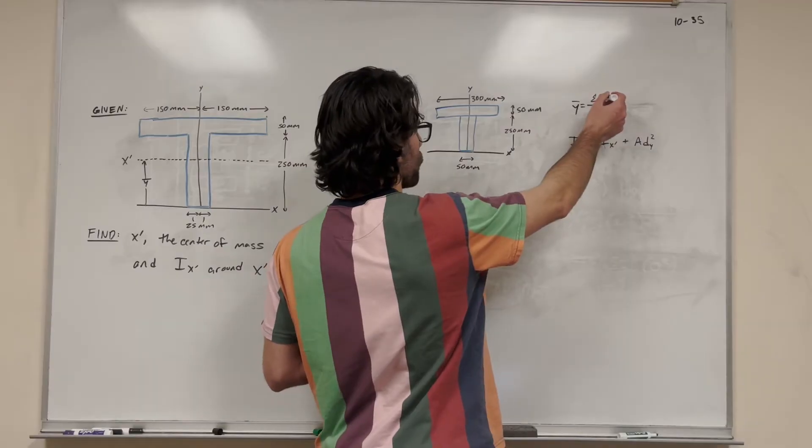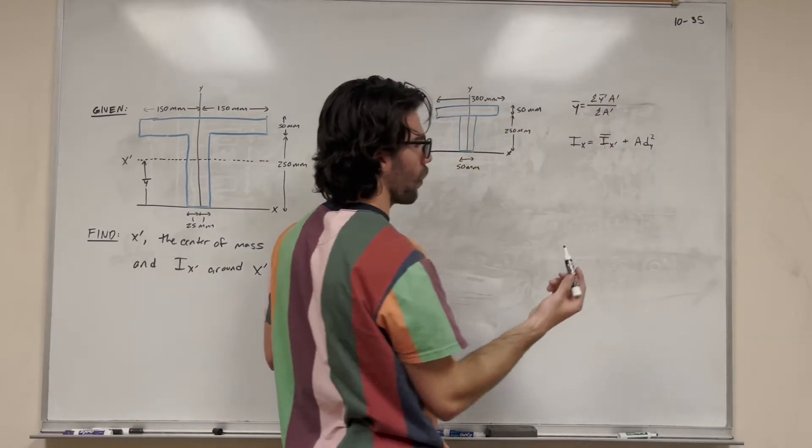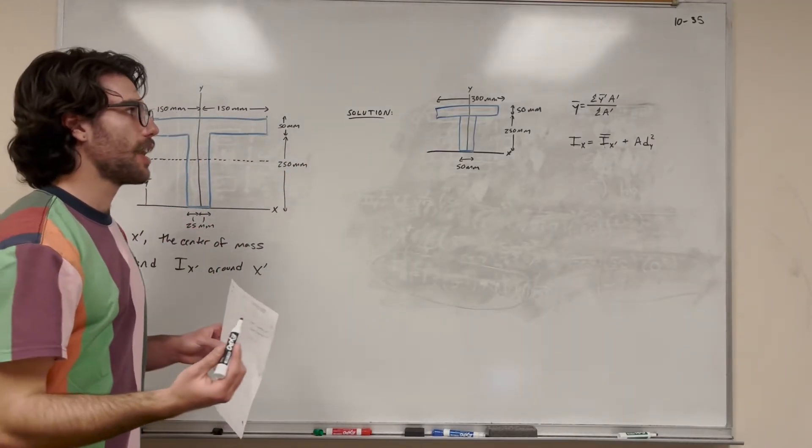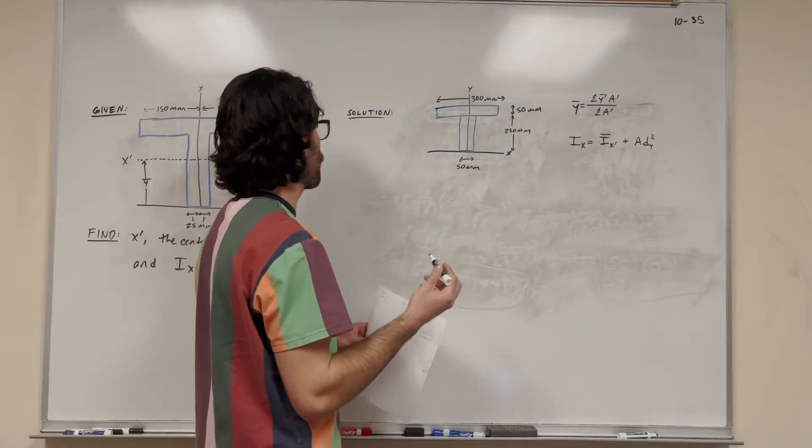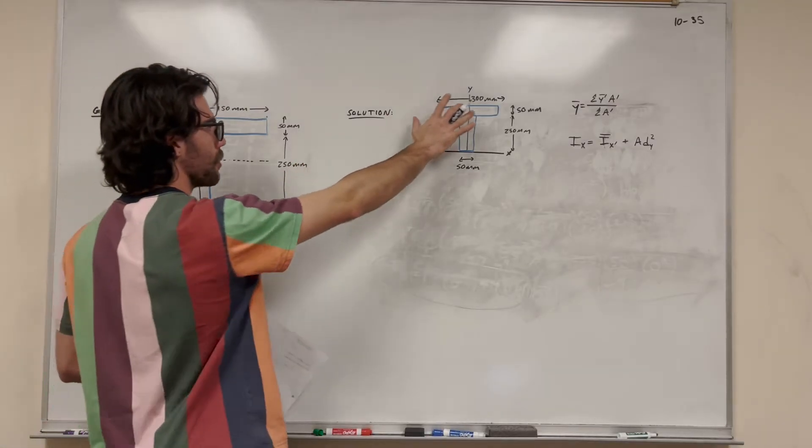We're going to sum up all of the center of masses times their area for the individual shapes, and we're going to add up the whole area of the shape to just find y bar. So first of all, what I did is I tripped the shape, and I simplified it into another shape, which is this here.